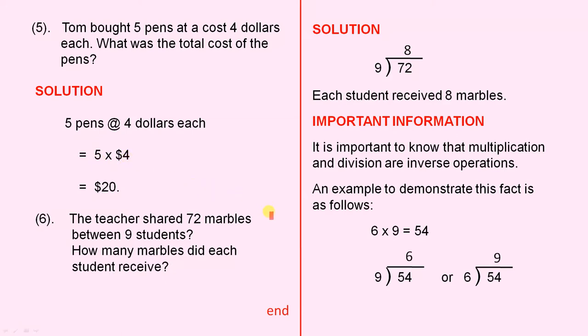The teacher shared 72 marbles between nine students. How many marbles did each student receive? The solution, nine divided into 72 goes eight times. Now the reason that eight is the answer is nine eights are 72. There's your knowledge of tables. So each student received eight marbles.